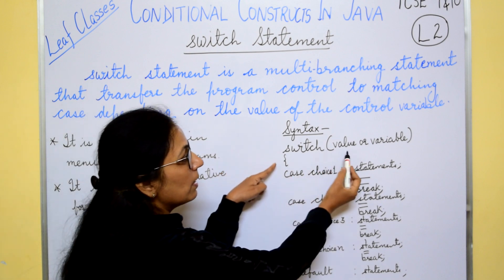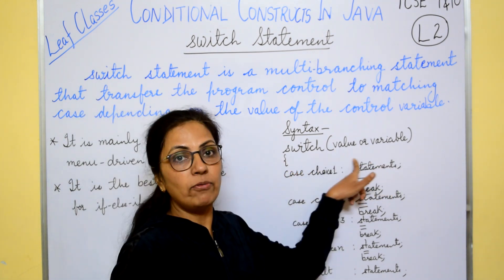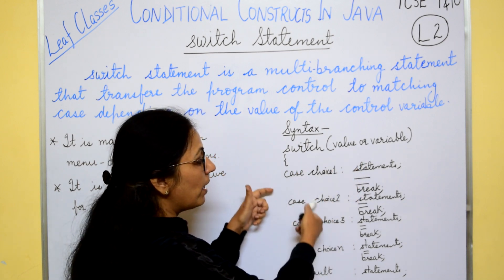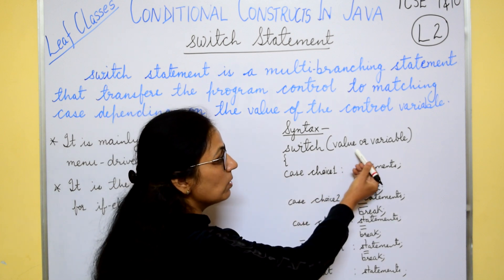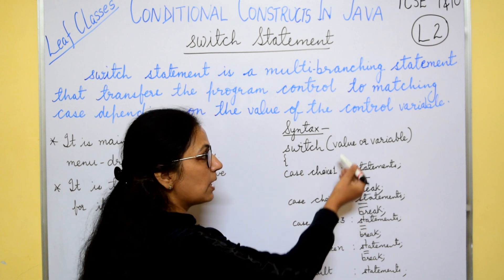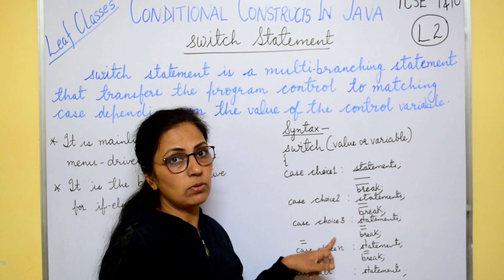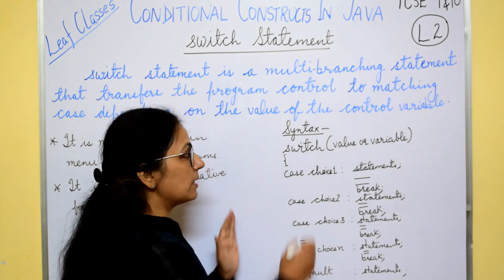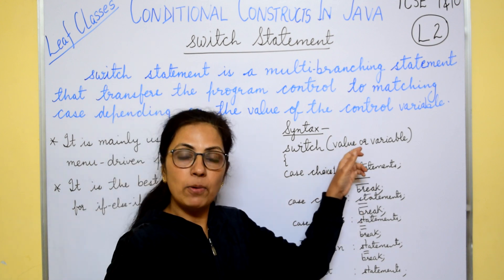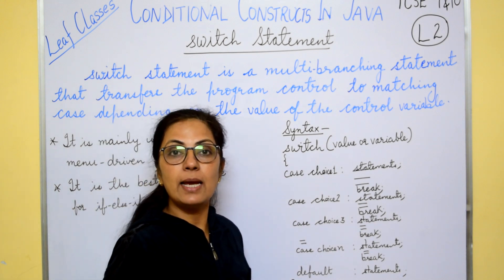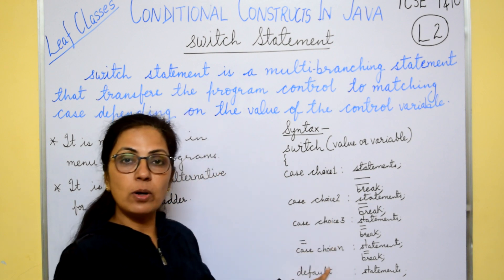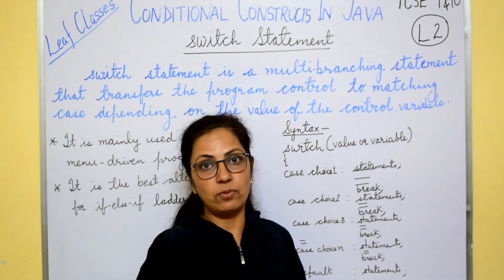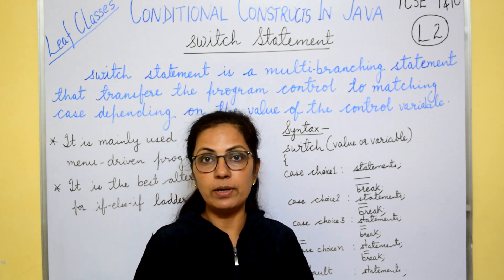Let us see the syntax. Switch takes a value or variable — this is the control variable. Depending upon this value, one of the cases will be executed. If this value matches case one, that block executes; if it matches case two, the second block executes, and so on. We can give any number of choices. The last is default — it works like the else statement of if. If none of the choices is satisfied, the statements written in the default block will be executed.